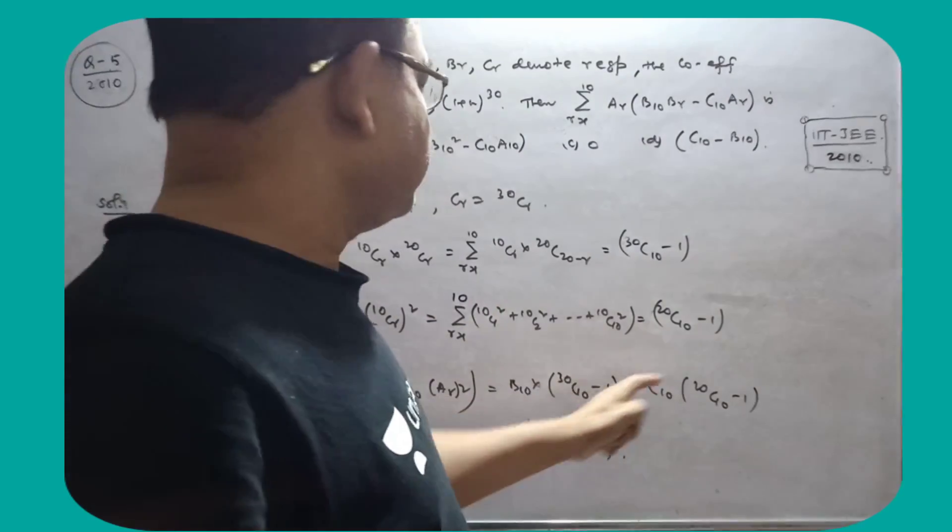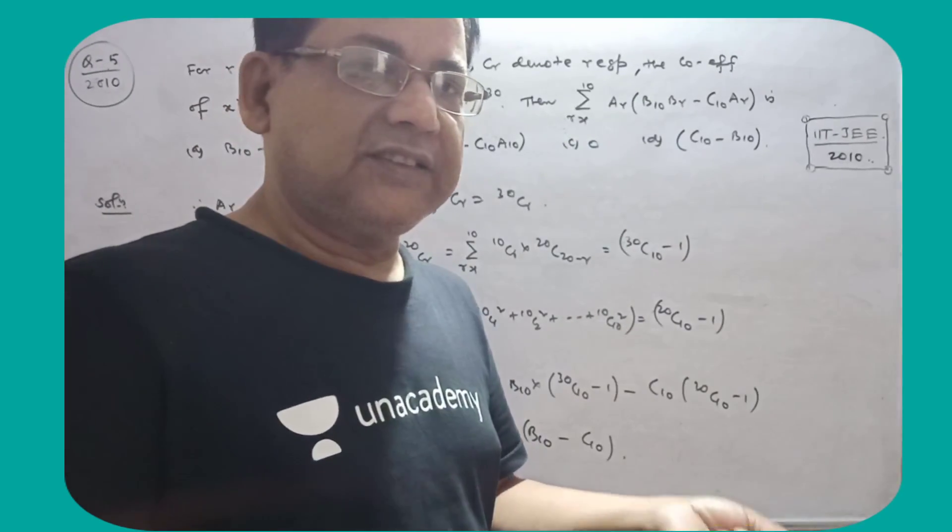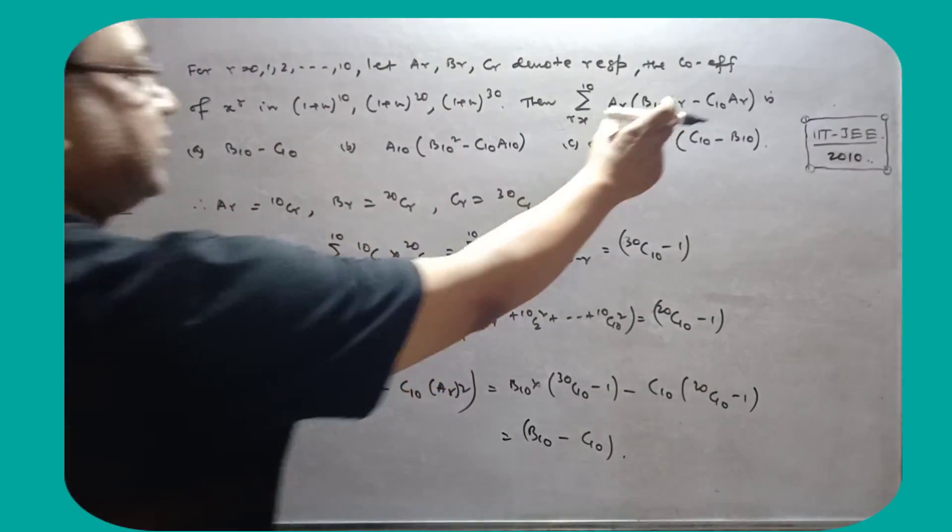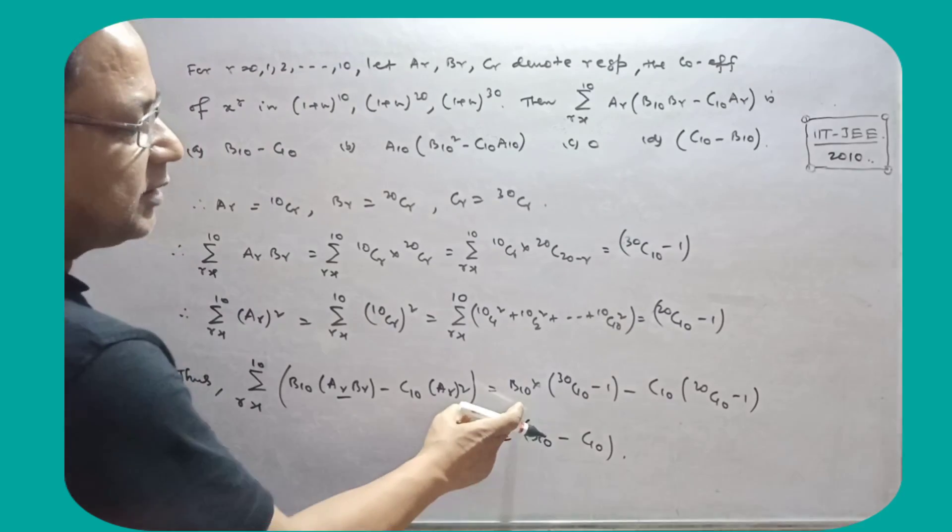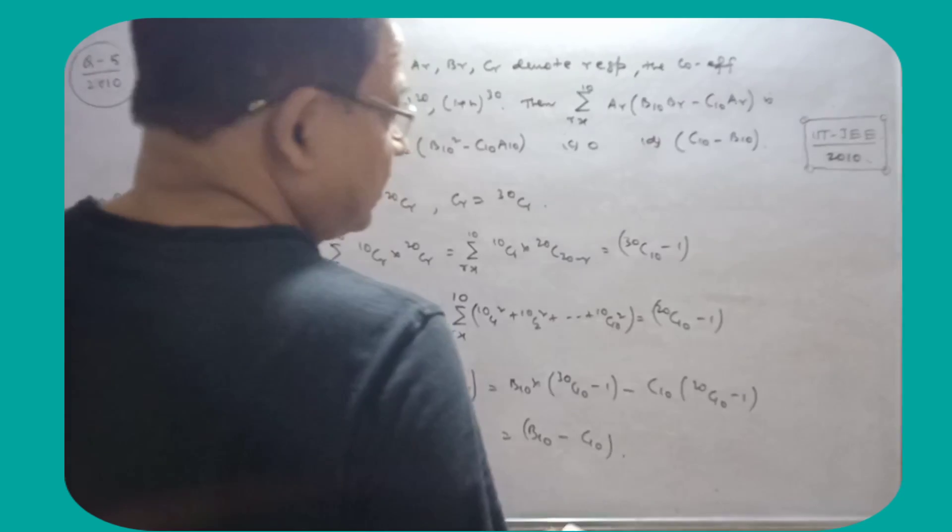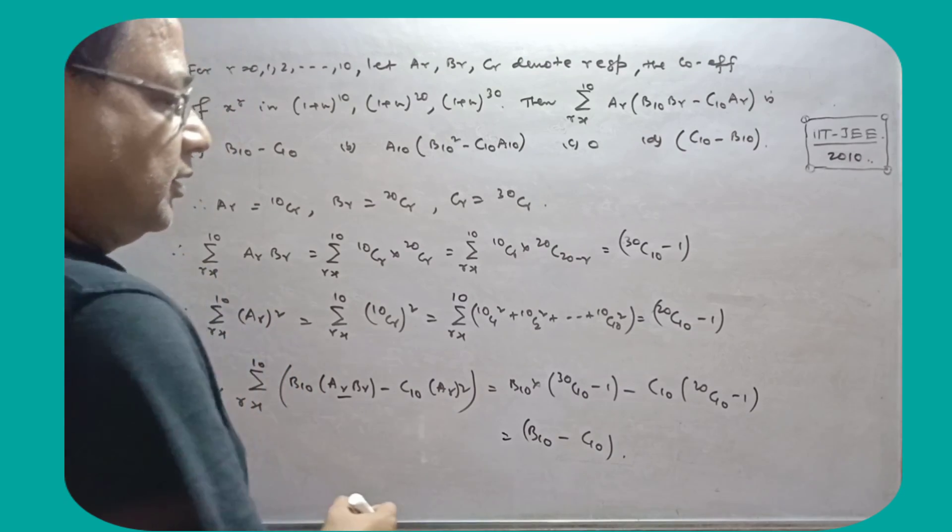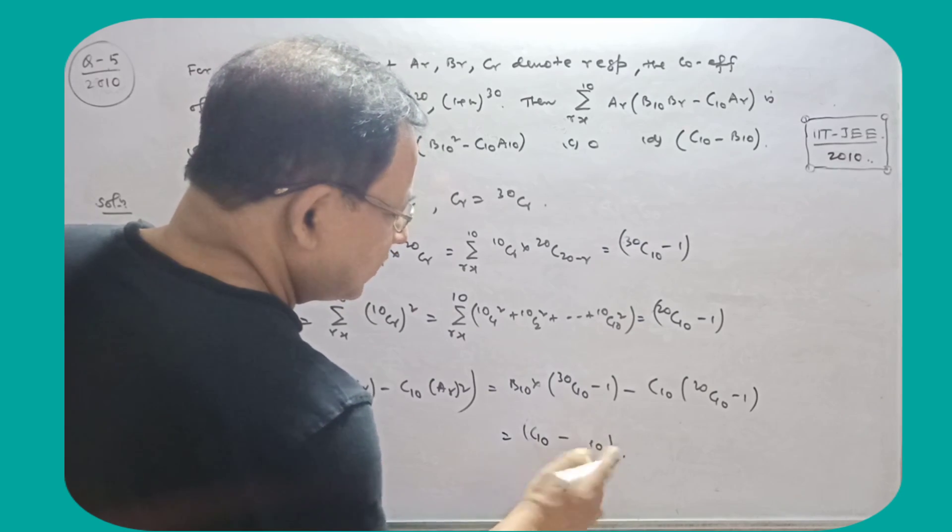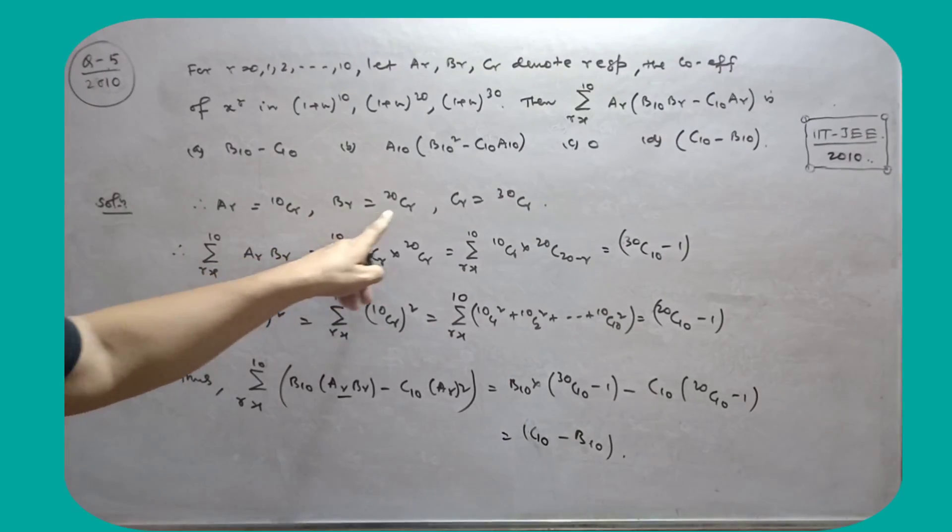This is 20C10, 1 is 1, this is C0, C1, C1, C2, C1, C2, C10 into this minus. So this is C10 into this.